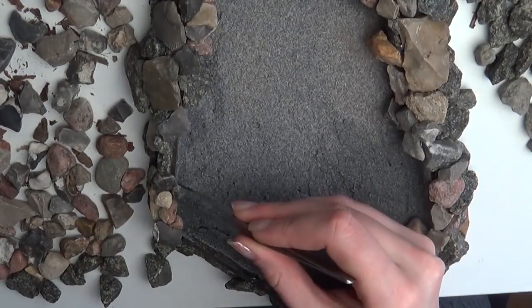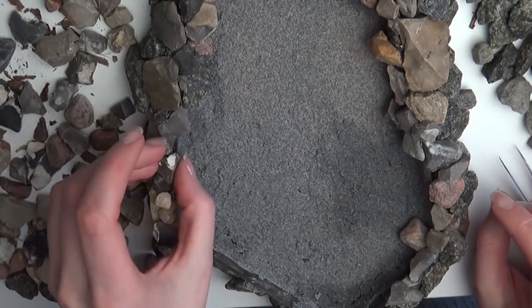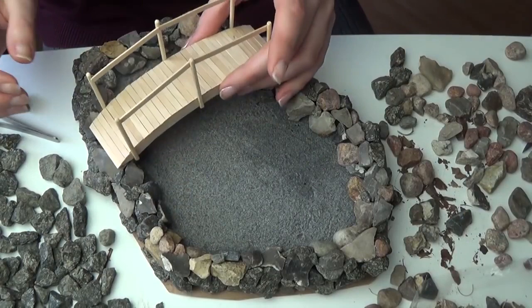Just take your time. I used different sizes of rocks so you can cover all the visible plastic. When you're happy with the look of your pond, set it aside, and then we're going to work on the fish.